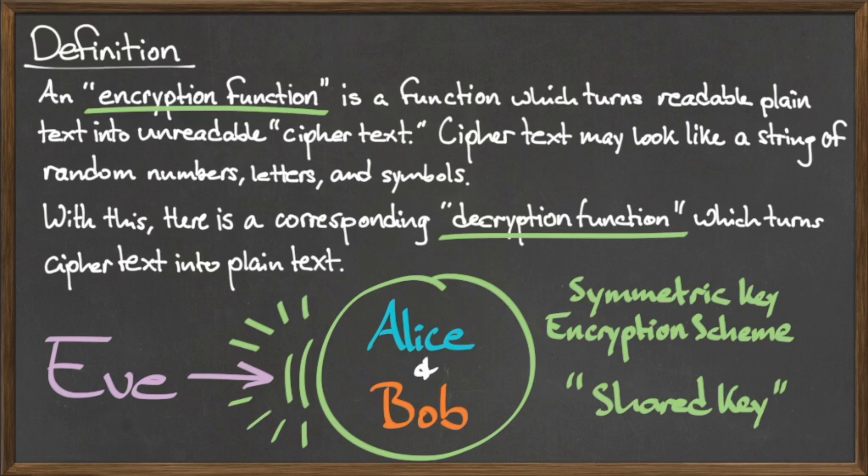Even if Eve manages to intercept the encrypted message, without the shared key the ciphertext is useless.